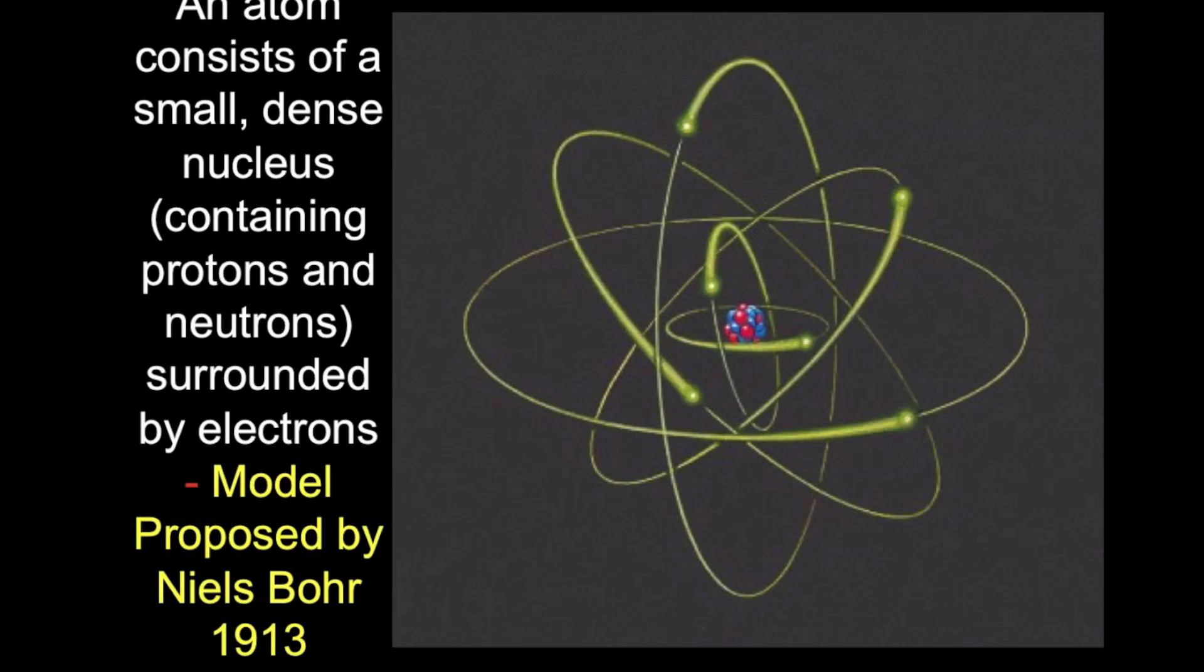The model that I'm describing now, where electrons orbit the nucleus, was first proposed by Niels Bohr in the early 20th century.